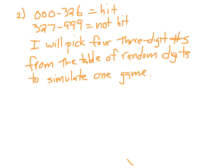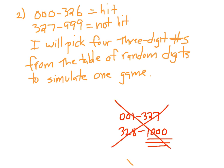In step two, assigning the digits, I'm going to assign three-digit numbers. Why three-digit numbers? Because the number was 32.7%, and there's no way to represent that in under three digits. Numbers 000 through 326 represent a hit, and numbers 327 through 999 represent not a hit. I started at 000 rather than 001 — if I used 001 to 327 for a hit, I'd need 328 to 1000 for not a hit, pushing into four-digit numbers. Starting at 000 keeps everything in three digits.